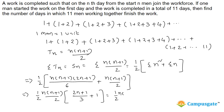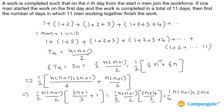Simplifying: n(n+1)/2 times (2n+1+3)/3, which gives n(n+1)/2 times (2n+4)/3. The 2 in the numerator cancels with the 2 in the denominator, leaving 1/6 times n(n+1)(n+2). So the sum of the first n terms is n(n+1)(n+2)/6.